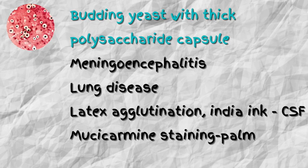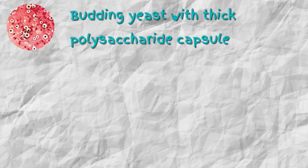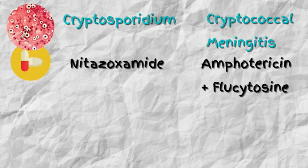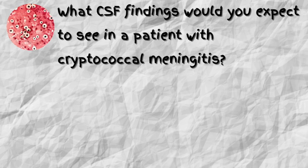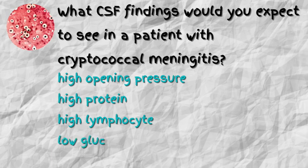Let's look at the differences in management of cryptosporidium versus cryptococcal meningitis. Cryptosporidium is treated with nitazoxanide. However, for cryptococcal meningitis, it is treated with two drugs, one of them being amphotericin B. For CSF findings in a patient with cryptococcal meningitis, you would expect high opening pressure, high protein, high lymphocyte count, and low glucose.